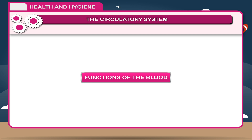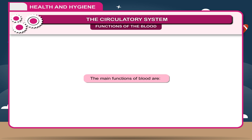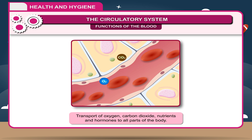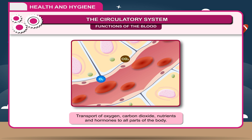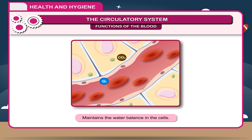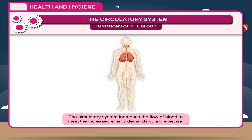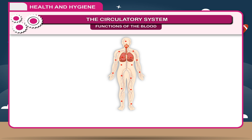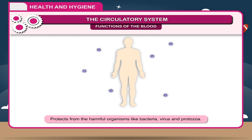The main functions of blood are: transport of oxygen, carbon dioxide, nutrients, and hormones to all parts of the body; maintaining water balance in the cells; increasing the flow of blood to meet the increased energy demands during exercise; regulating body temperature; and protecting from harmful organisms like bacteria, viruses, and protozoa.